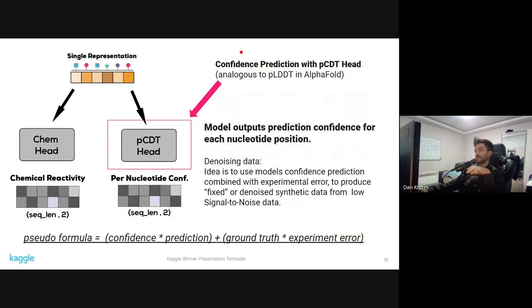And the idea why I wanted to get this feature to work is to denoise or fix the noisy data. Because some of the data was noisy, it had signal-to-noise lower than one. So the idea was we can predict how confident the model is for each nucleotide, and then we can combine it with the actual error from the experiments, and in that way we can create synthetically quality data that can aid future training. This is like a pseudo-formula: it's the confidence of the model for each particular nucleotide times the prediction and the ground truth times the experimental error.